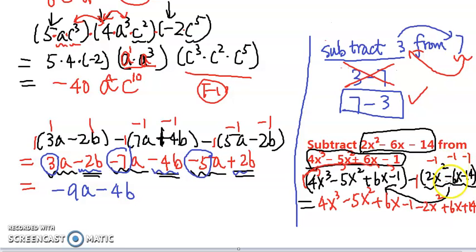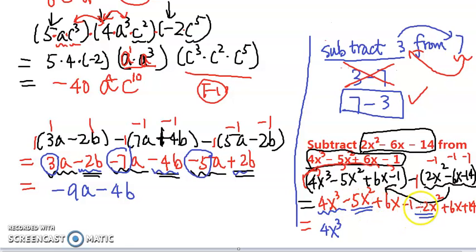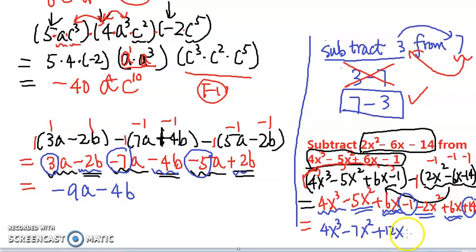Negative times negative is positive. Now we combine like terms. 4x cubed is the only term with the third power. For x squared: negative 5 minus 2 gives negative 7x squared. For x: 6x plus 6x gives 12x. For constants: negative 1 plus 14. A correction here — negative 1 plus 14 is positive 13, not 15. So the final answer is 4x cubed minus 7x squared plus 12x plus 13.